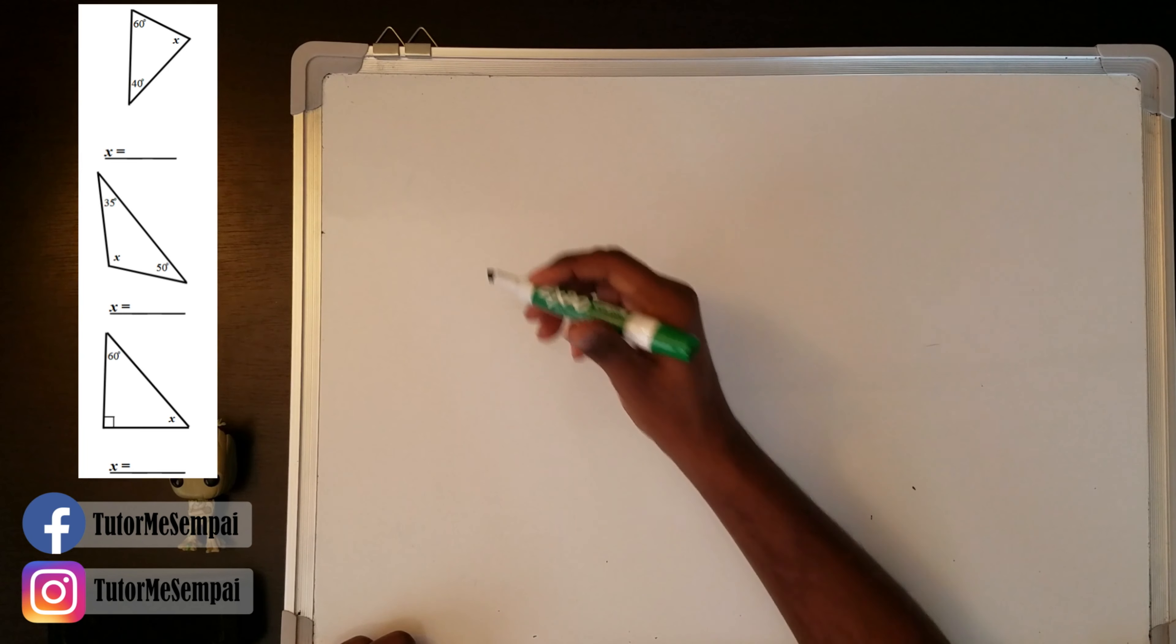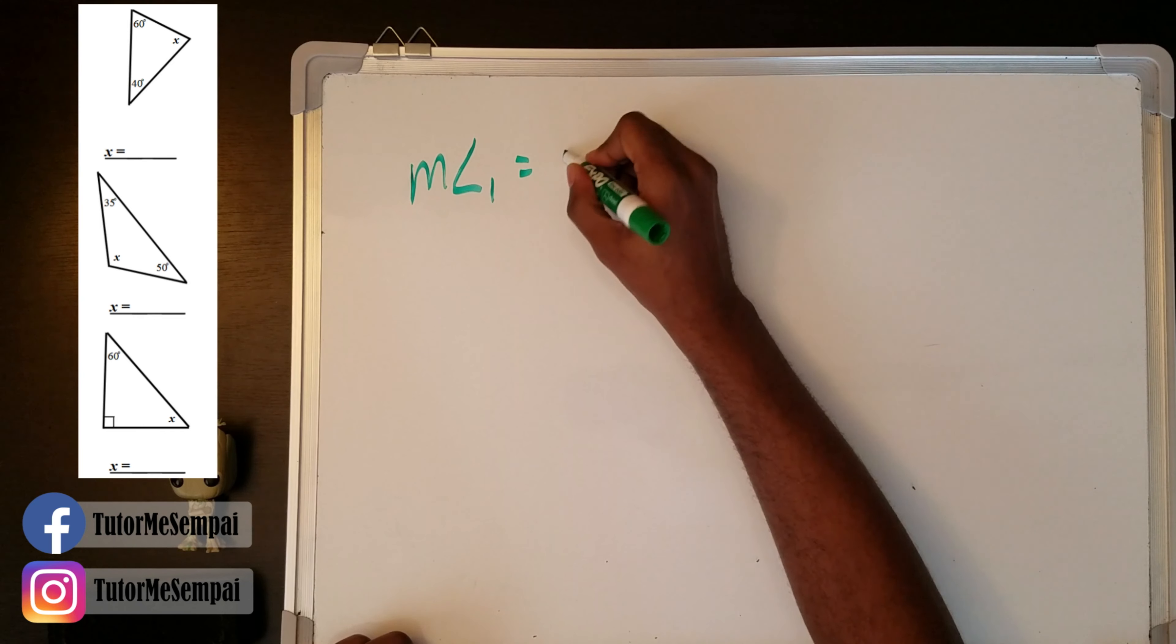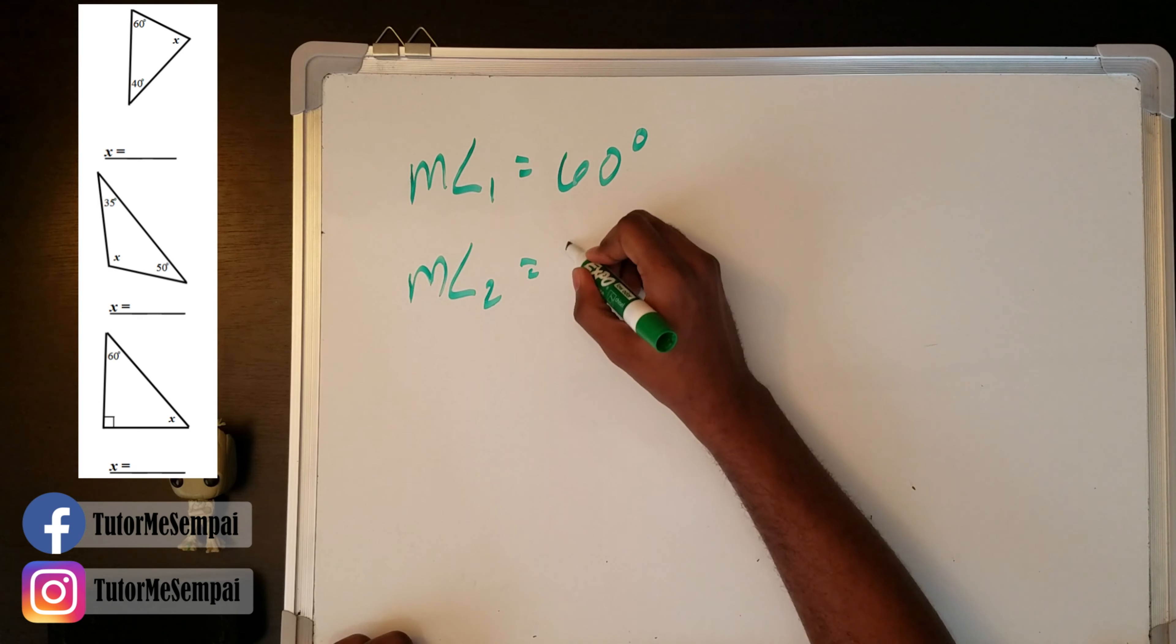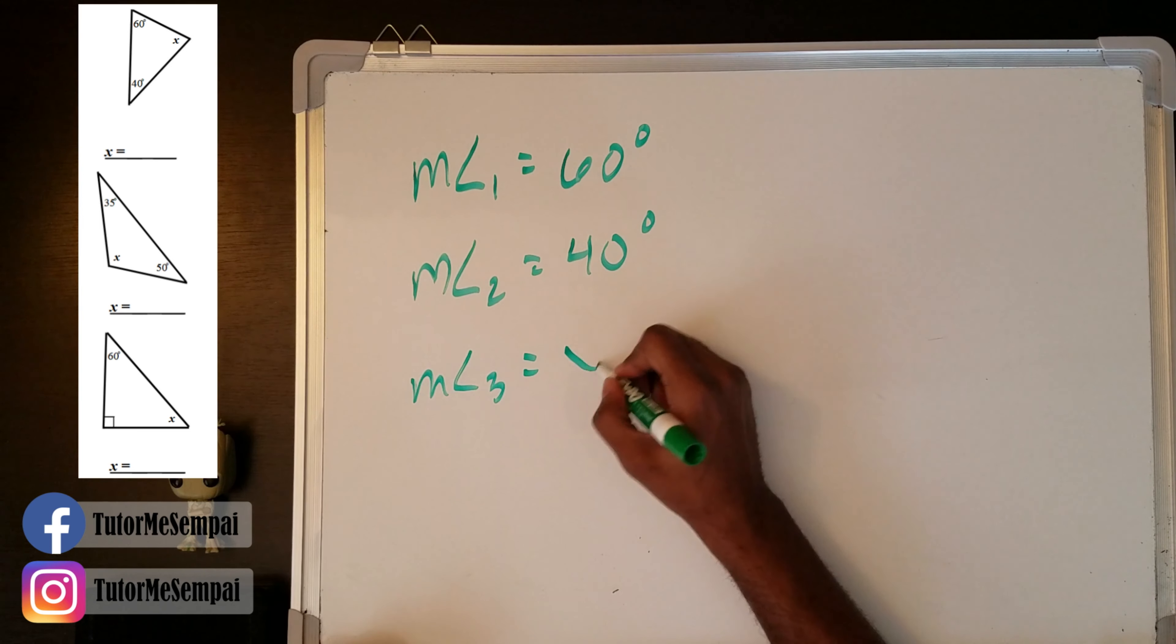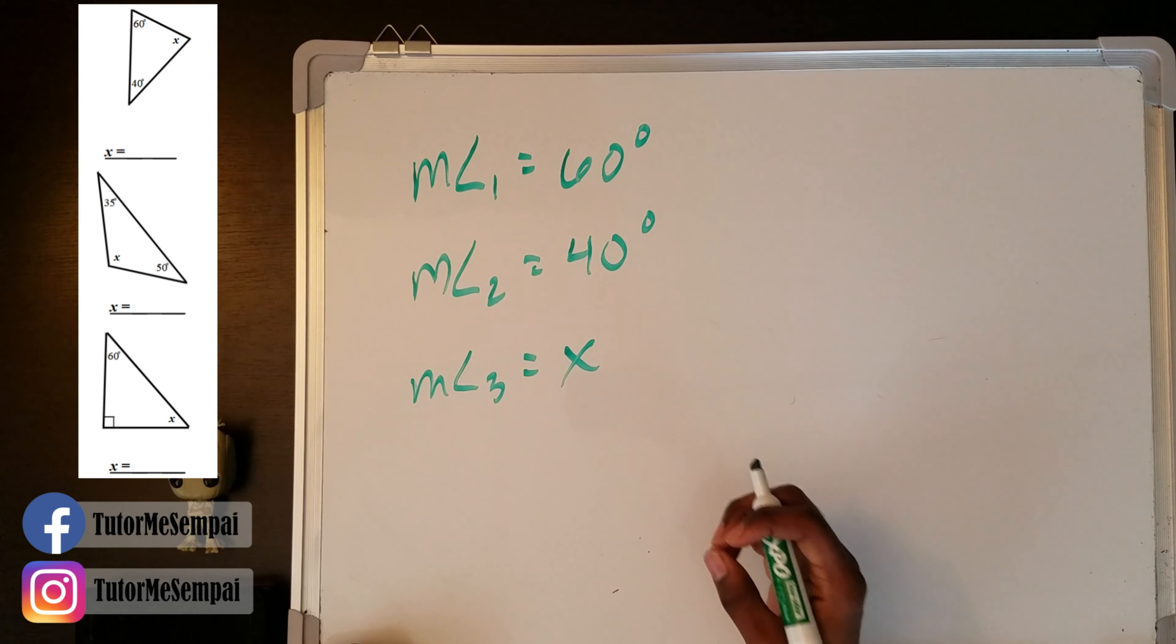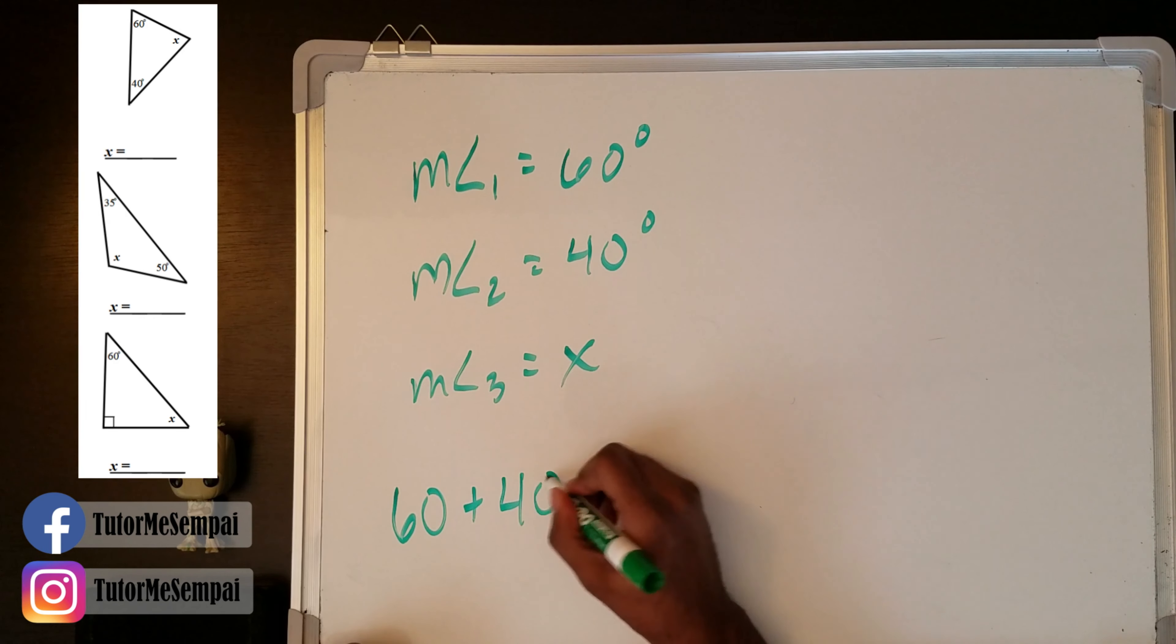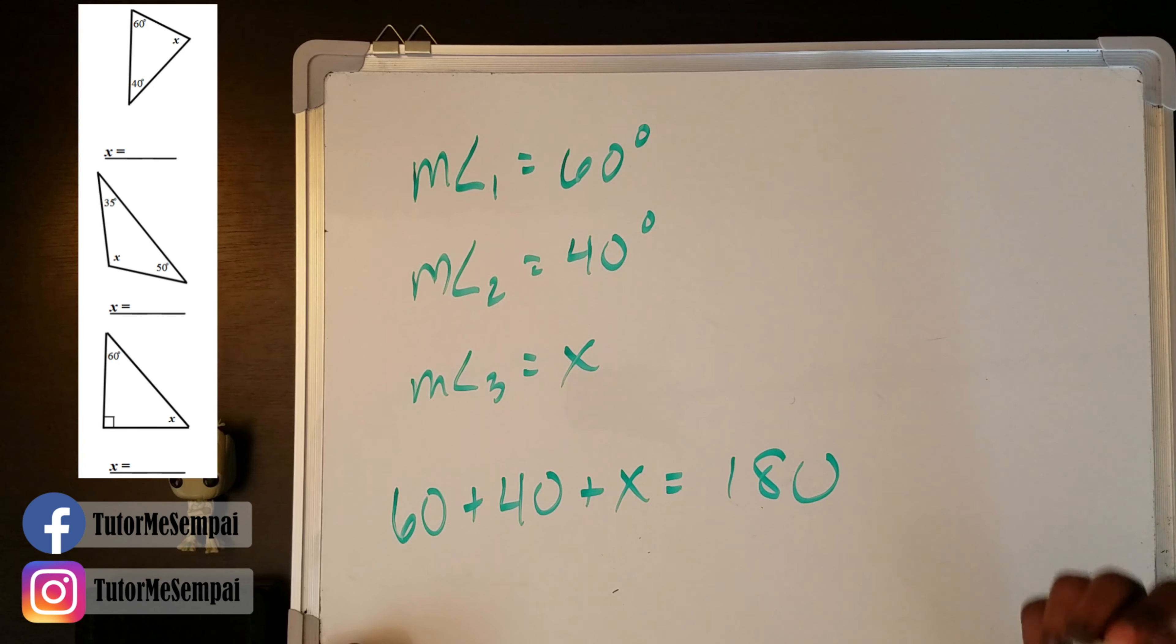Starting with this first triangle, we have one angle whose measure is 60 degrees. We have another angle whose measure is 40 degrees. And we have one more angle whose measure we don't know. So we're denoting it with an X. We want to find this X. And to do that, we're going to use the fact that all of these angles, when added up together, have to be 180. So that's 60 plus 40 plus this X has to equal 180.